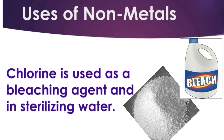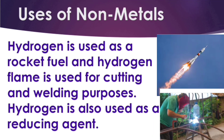Chlorine is one of the non-metals. Chlorine is used as a bleaching agent and in sterilizing water. The last non-metal is hydrogen. Hydrogen is used as a rocket fuel, and hydrogen flame is used for cutting and welding purposes, as well as a reducing agent.